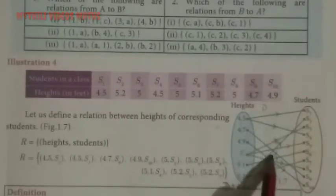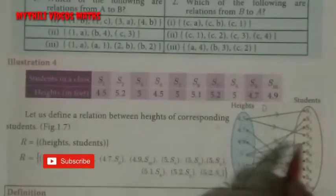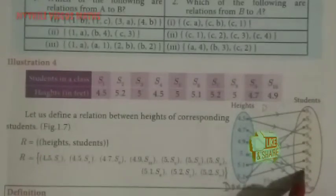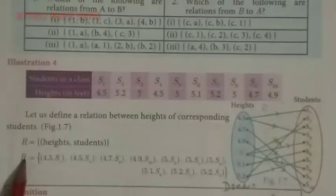So we can write this as well. This is the domain, this is the codomain or range. So we can write the relation. How do we write the relation?